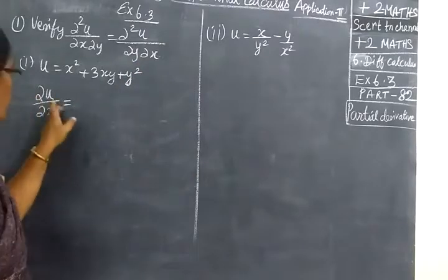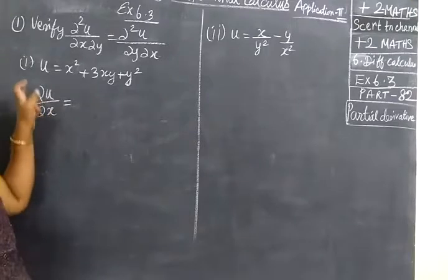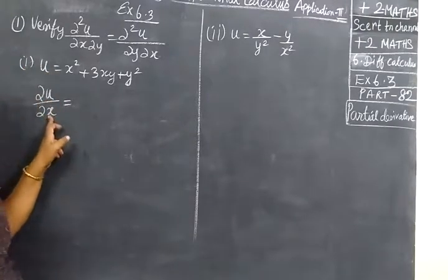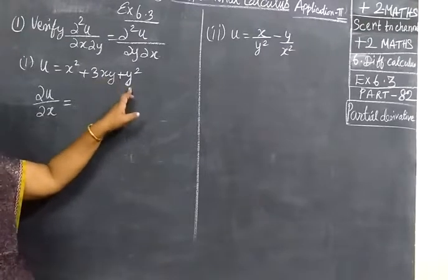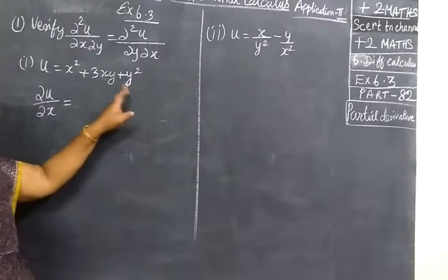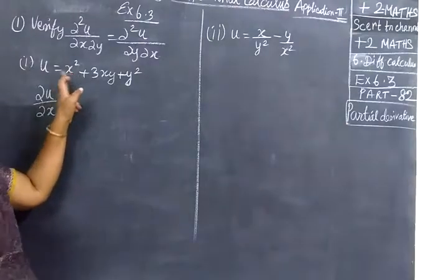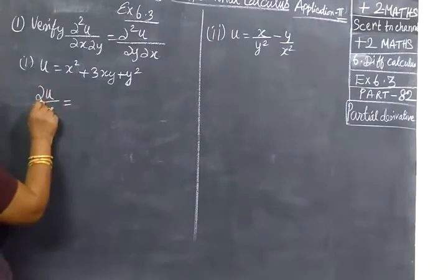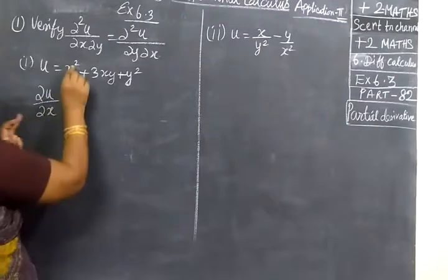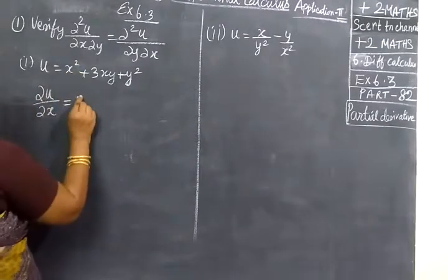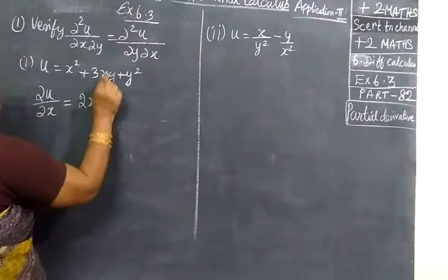∂u/∂x means partial derivative of u with respect to x only, so we are treating y as constant. With respect to x, we differentiate: x² gives 2x, plus 3x gives 3, treating y as constant.